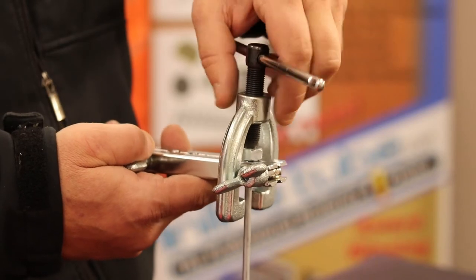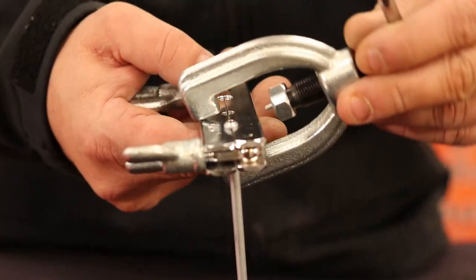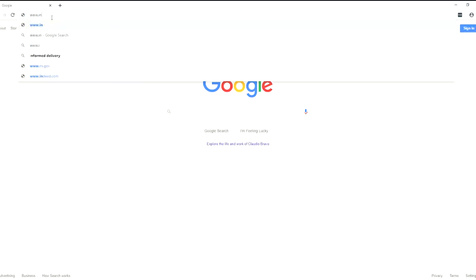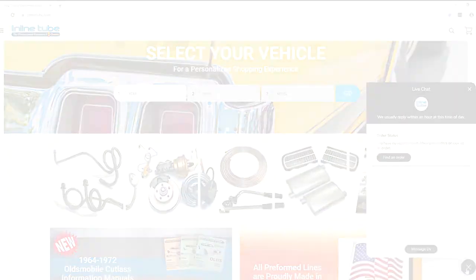Remove the pressure die clamp from the die block and your metric bubble flare is complete. If you have any questions, comments, or concerns regarding any one of our 30,000 products, please visit us at www.inlinetube.com to speak with an expert. Feel free to leave a comment below of any future videos that you would like to see.